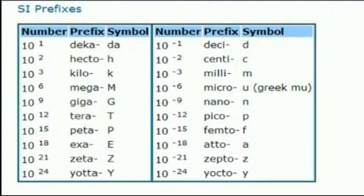As an engineer, we should be able to convert units of the same quantity in different systems and forms. The CGPM recommended standard prefixes for multiples and submultiples of units are shown in the slide. The entire SI system consists of units which are multiples and submultiples of MKS units in steps of 10³ or 10⁻³.